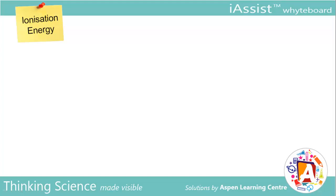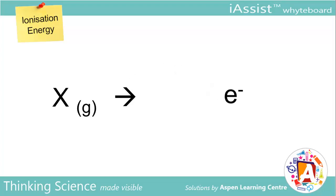Let's start off with the definition of first ionization energy. The first ionization energy of an element is defined as the amount of energy required to remove one mole of electrons from a mole of gaseous atoms to form a mole of 1+ cations.